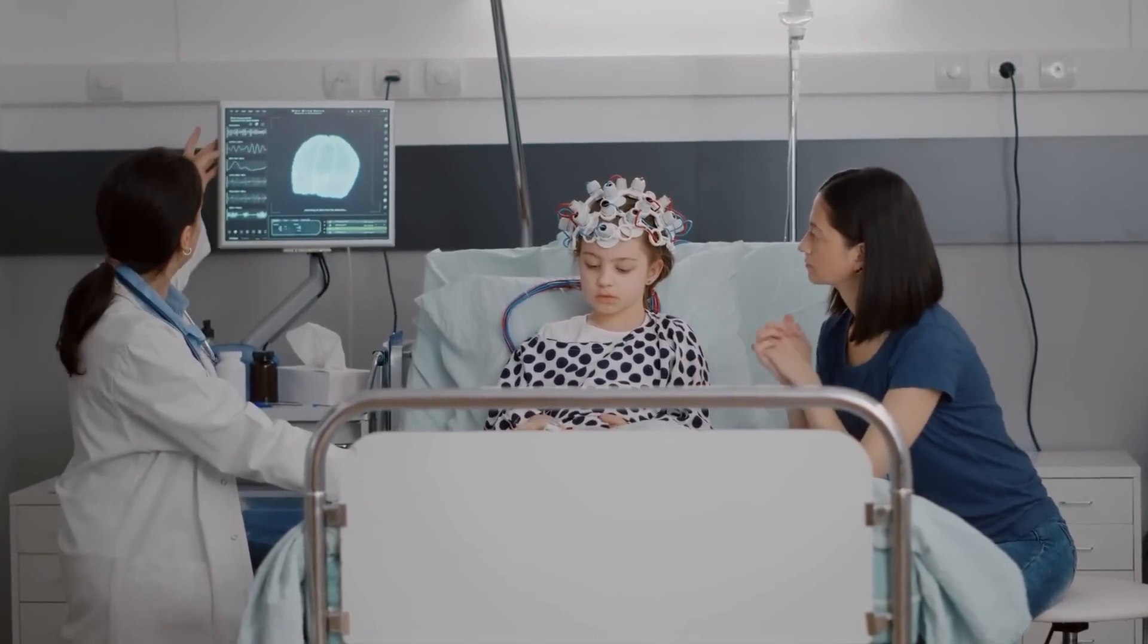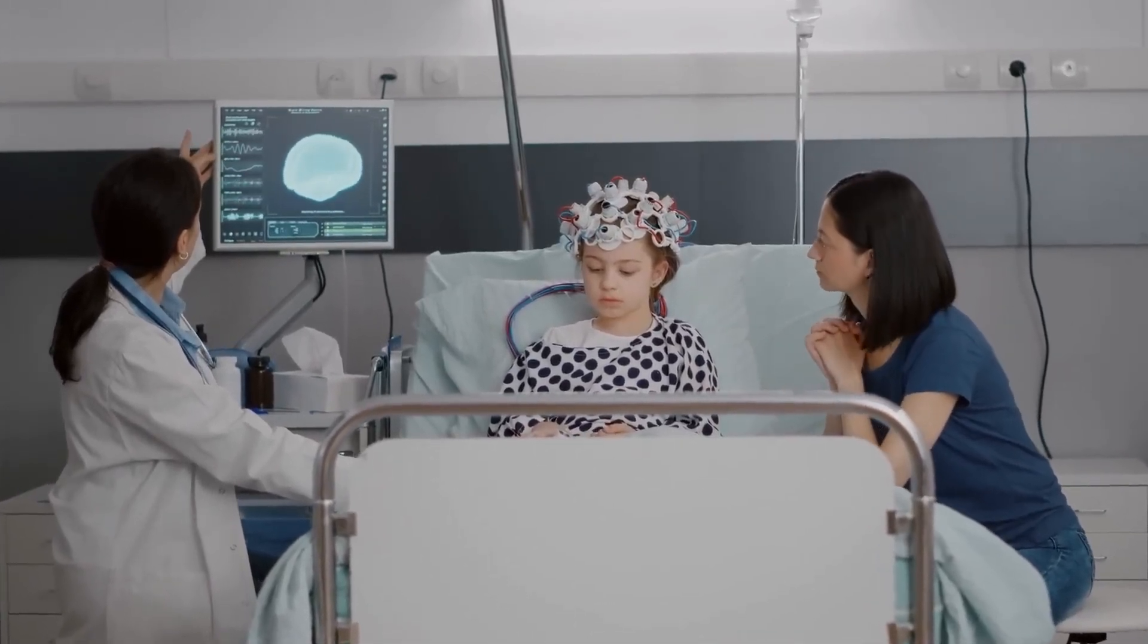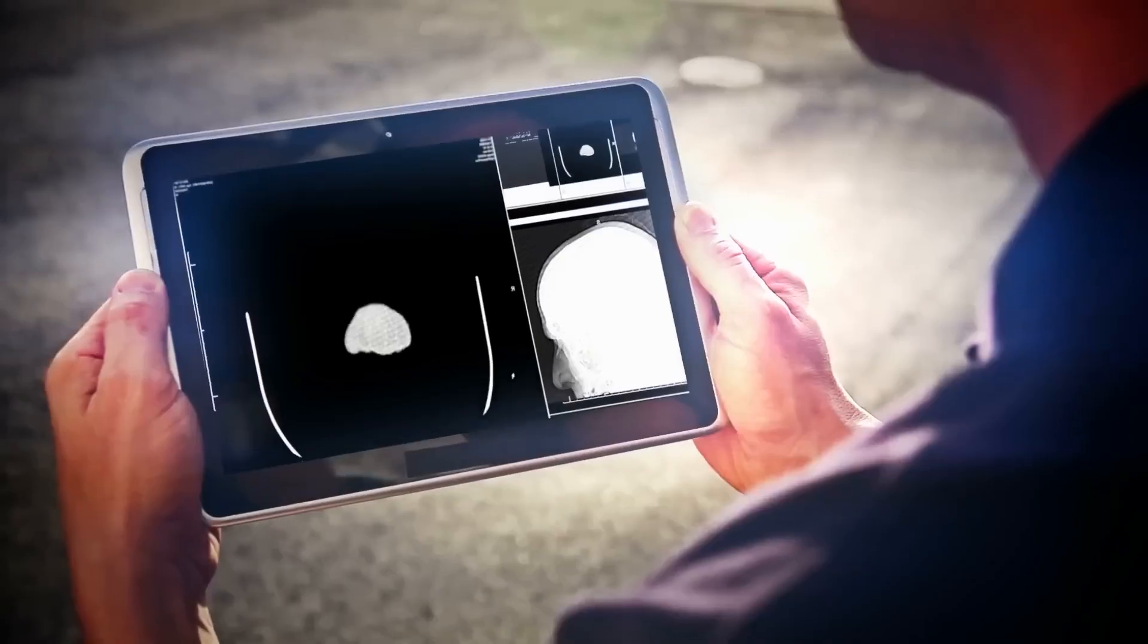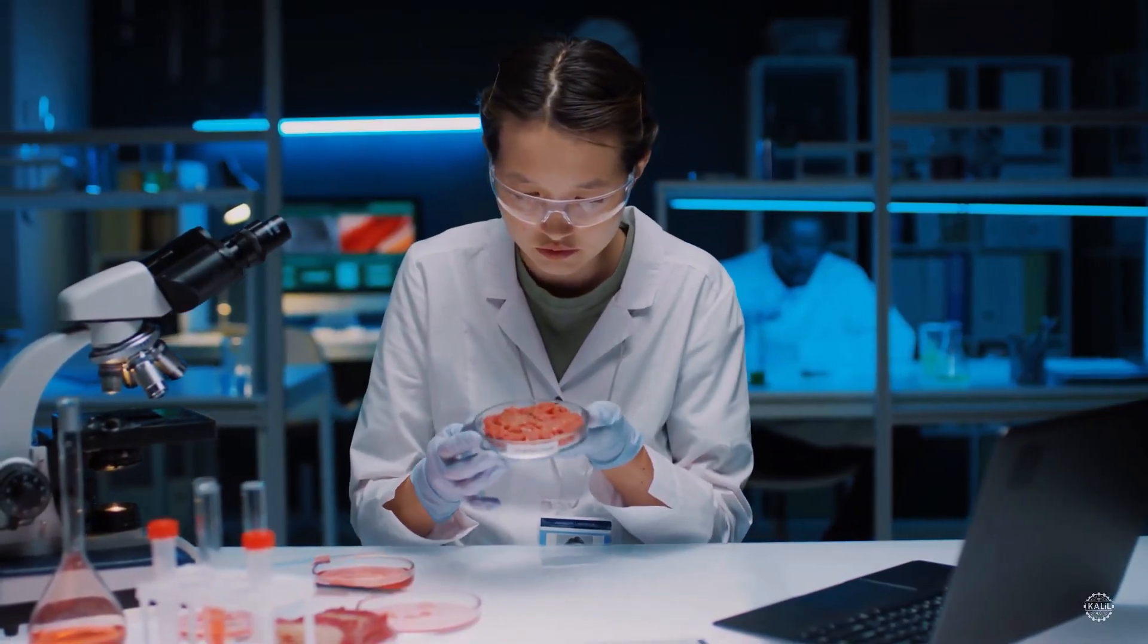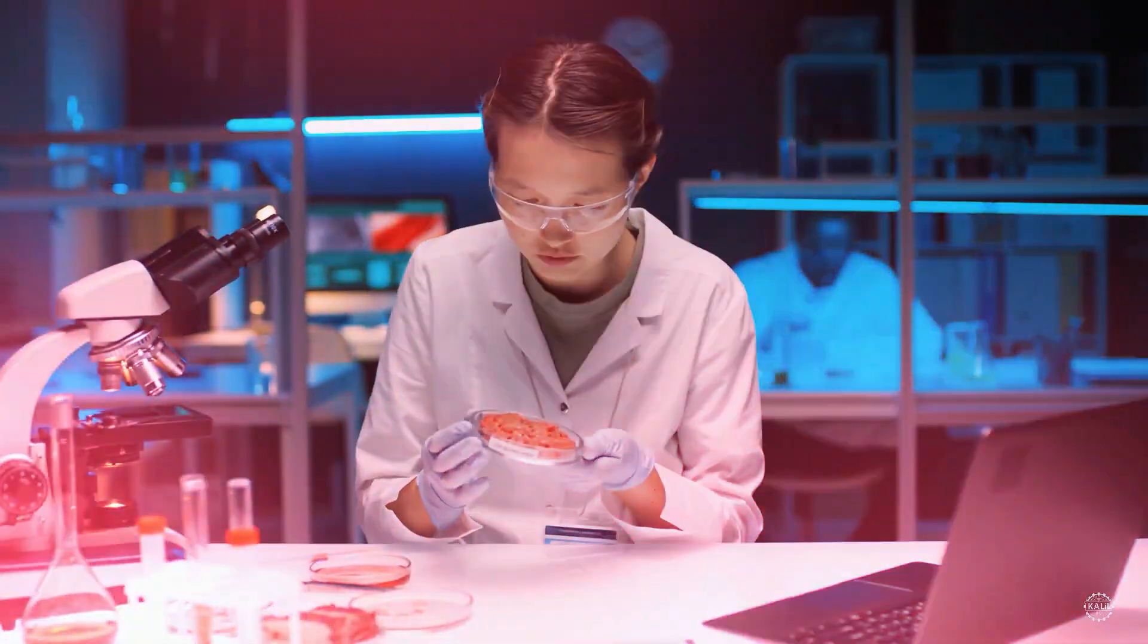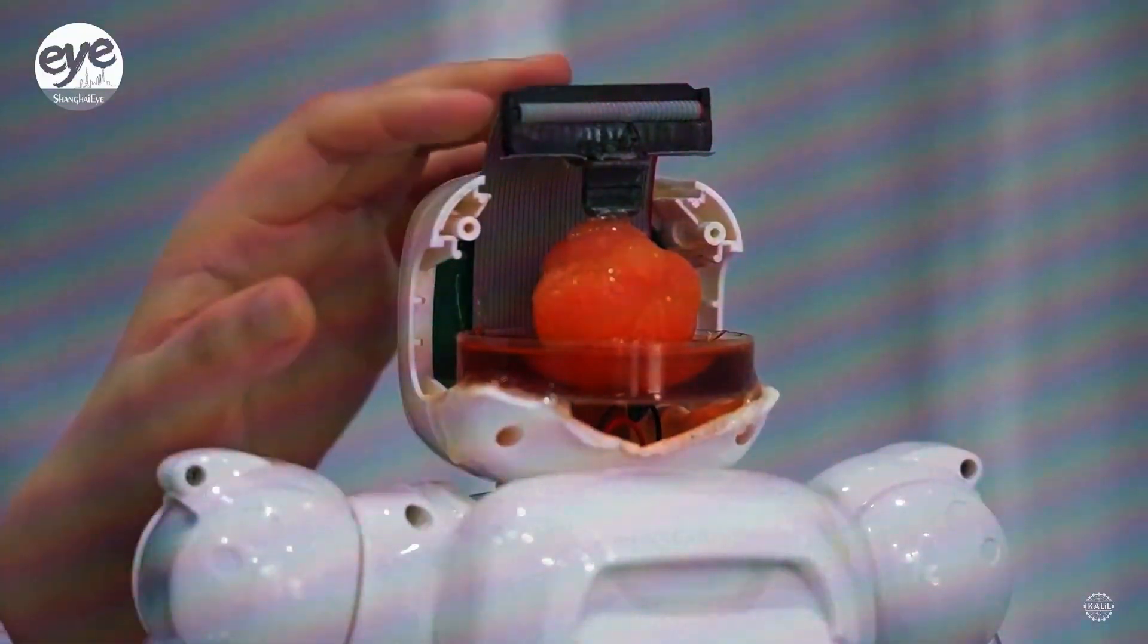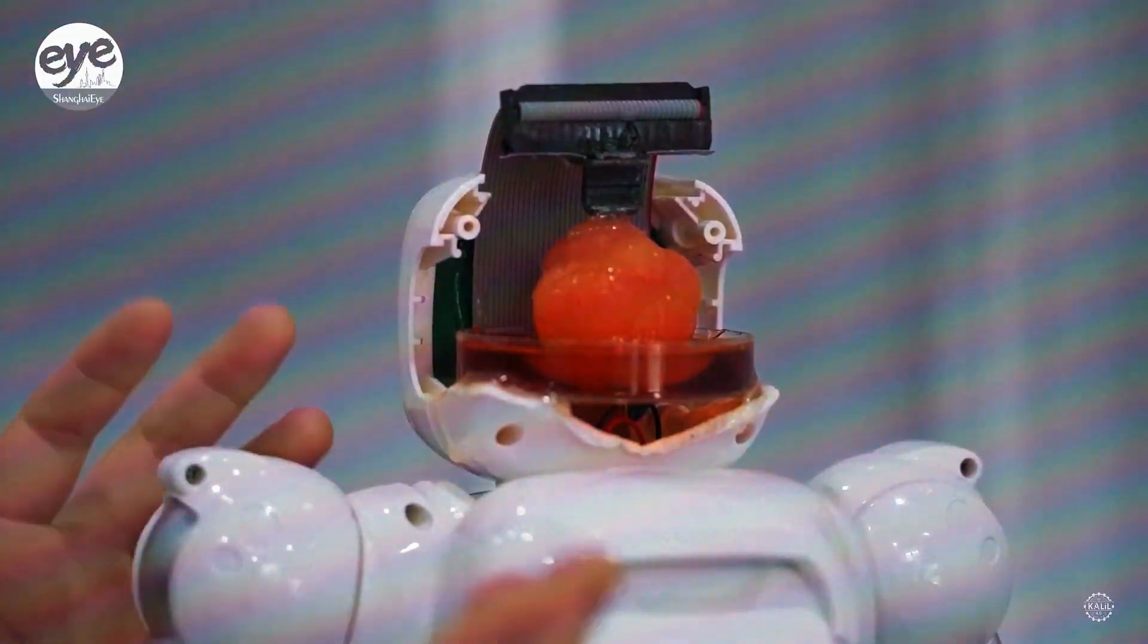Some scientists propose a mix of living neurons and silicon chips as a more efficient way to create brain-like functions, rather than trying to copy the entire human brain. The merging of artificial intelligence with biological neurons allows them to work together and combine their strengths.